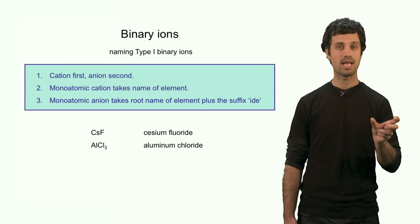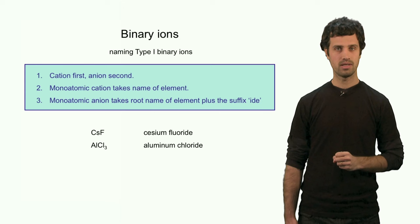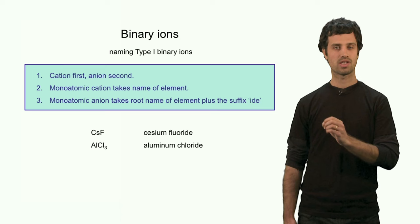The next compound is aluminum chloride. Because we name aluminum first, the cation, the anion is the chlorine anion. We use the full root, which is chlorine, with the suffix '-ide', which means aluminum chloride.